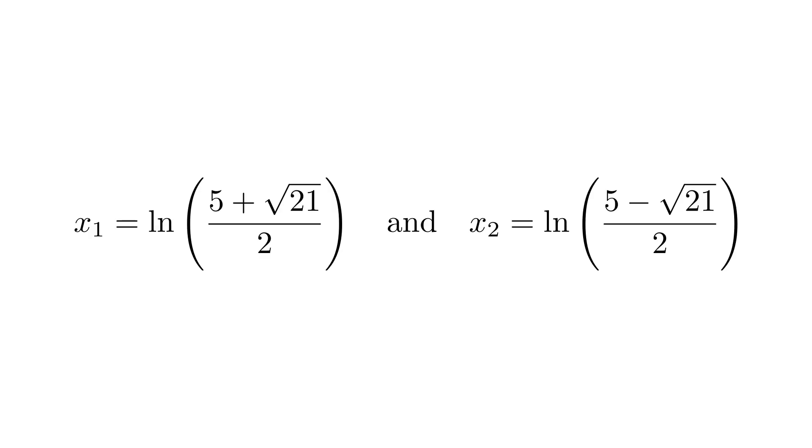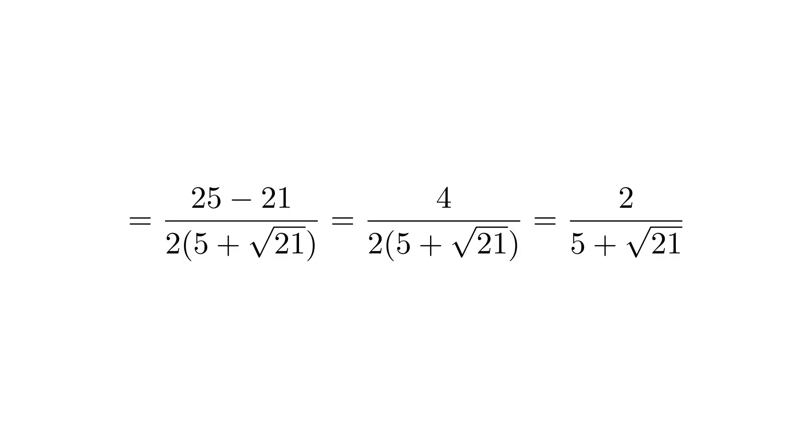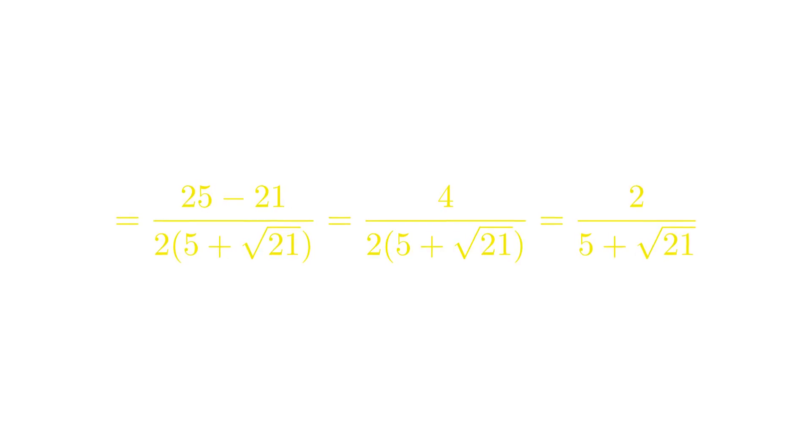So we have two different values of x. Let's take a closer look at what's going on inside those logarithms. This second expression might look completely different from the first, but watch what happens when we do a little algebraic magic. I'm going to multiply by one, but in a very clever disguise, multiplying by the conjugate divided by itself. When we multiply out the numerator, we get a difference of squares pattern, which gives us 25 minus 21, which is 4. After some simplification, this becomes 2 divided by 5 plus the square root of 21. But look at this. This is exactly one divided by our first expression. The two arguments are reciprocals of each other.